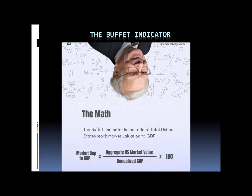The formula is: the aggregated US market value times 100, divided by the annualized GDP. This tells us whether a stock market is under or overvalued in comparison to what the economy is producing.